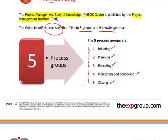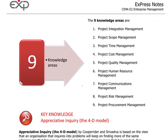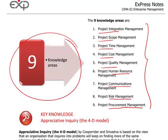So the five process groups are initiating, planning, executing — actually doing it — monitoring and controlling, and closing. The nine knowledge areas are: project integration management, project scope management, project time management, cost management, quality management, human resource management, communications management, risk management, and procurement management.